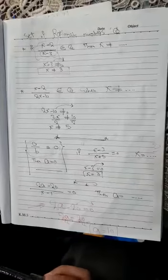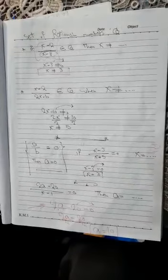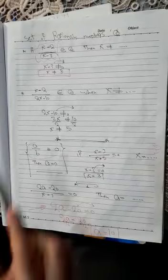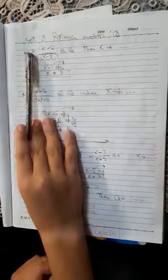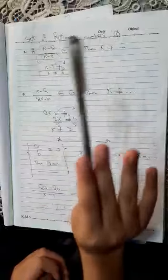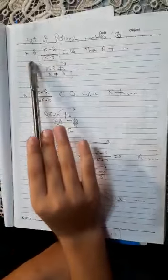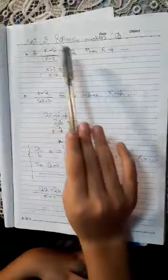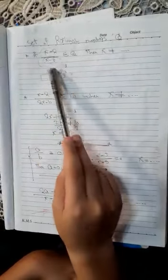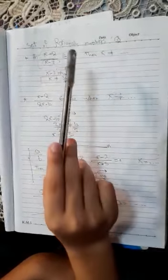Assalamu alaikum warahmatullahi wabarakatuh. Today we will take the last part of lesson one on the set of rational numbers, and its sign is Q. If (x-2)/(x-3) belongs to Q,